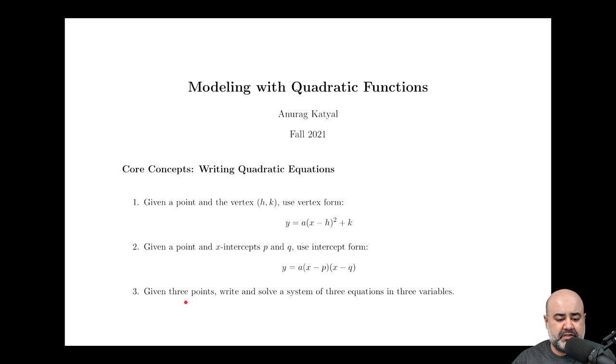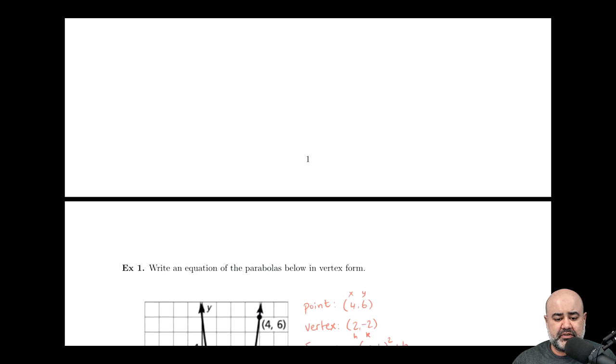And then finally, there's a third scenario where, and this will typically happen with tables of values, where you're given three points, and it might be more. You might be given five points, or you might be given seven points. But regardless, we choose three points to analyze, and then we write and solve a system of three equations in three variables. Let's get started. Let's take a look at some of the examples in this section.